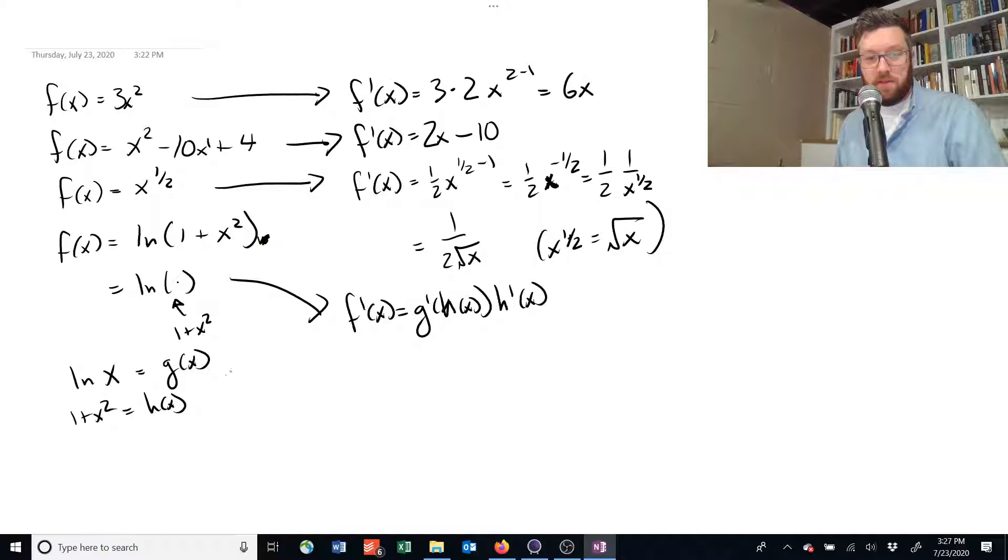Okay? So, the derivative of this guy is equal to 1 over x. And the derivative of this guy isn't too hard either. It's 2x. Okay? The derivative of 1, you can imagine that as 1 times x to the power of 0, because x to the power of 0 is also equal to 1. And if we bring a 0 out front, the whole thing disappears.